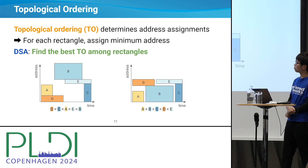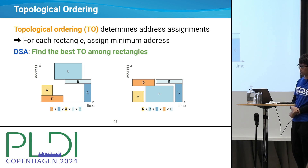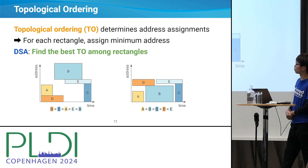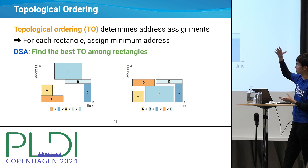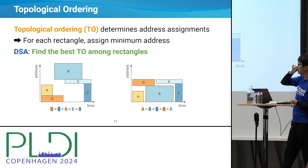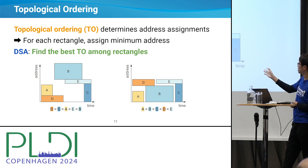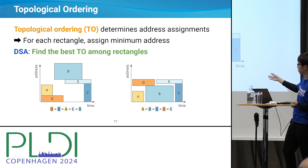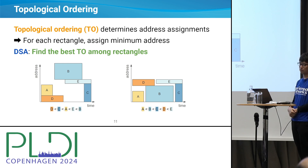To solve the DSA problem, we introduced a new notion called topological ordering, which determines address assignments. A topological ordering is an ordering among rectangles. For example, in the left figure, the topological ordering is D, C, A, E, B. We determine the address assignment by placing D to the lowest position, then C, then A, E, B. So topological ordering determines the address assignment. In the right example, the topological ordering is A, B, C, D — so A is placed under D because A has a smaller topological ordering than D. The DSA problem can be rephrased as finding the best topological ordering among rectangles such that the address space is minimized.